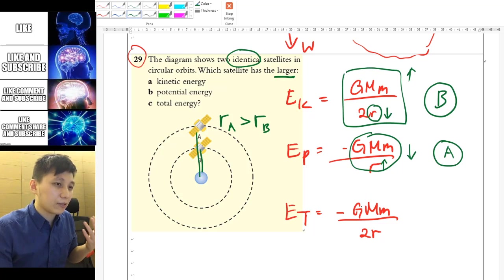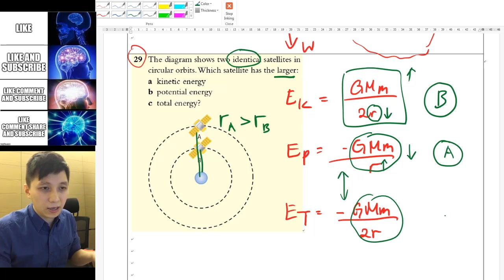And lastly, talking about the total energy, the idea is similar to potential energy because they are both negative. And so in this case, it will also be A. So A will have a greater total energy as well.